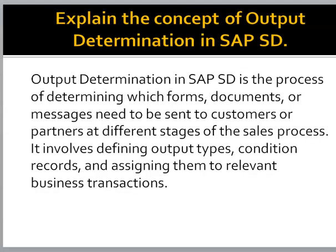Explain the concept of output determination in SAP SD. Output determination in SAP SD is the process of determining which forms, documents, or messages need to be sent to customers or partners at different stages of the sales process. It involves defining output types, condition records, and assigning them to relevant business transactions.